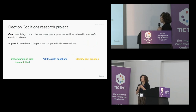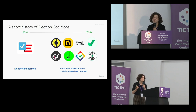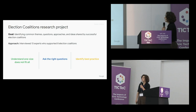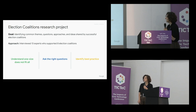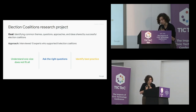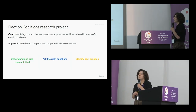For this research project, we wanted to understand, of all the coalitions that had come before, how they worked, what the lessons learned were, and what we could extrapolate for future election coalitions. We interviewed 13 experts who supported eight coalitions around the world. We wanted to understand best practice and what makes a successful election coalition, because some of them didn't do so well, and some really flourished and changed the way that lots of people voted in a country.